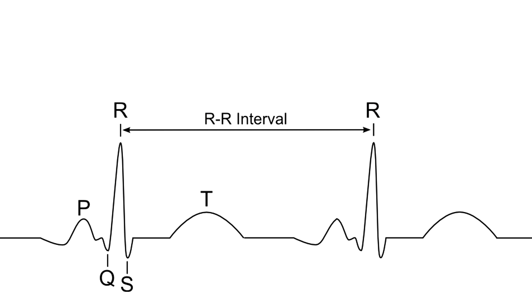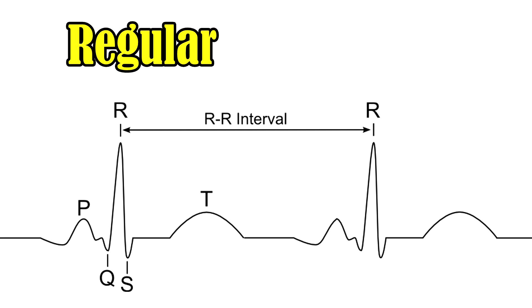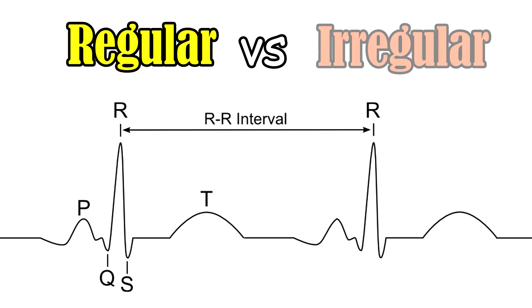Finally, we've reached the fourth step. You're going to grab your calipers and measure from one R to the next — that's your R-to-R interval. If it's the same throughout the six-second strip, then we know we have a regular rhythm. If it's different, then we know we have an irregular rhythm.